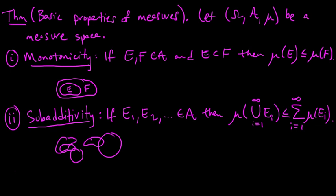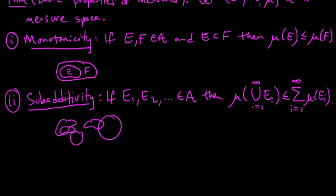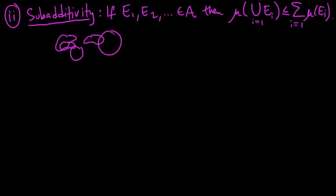In the previous video, we started looking at basic properties of measures, and we're going to continue with our third property, which is called continuity from below.